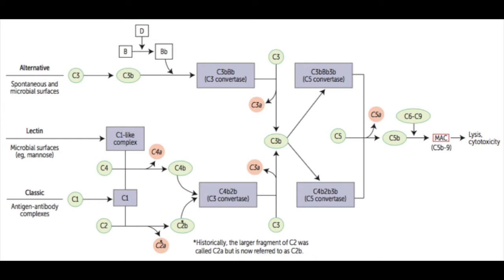This whole group, so 5b, 6, 7, 8 and then a ring of 9 is what we call the membrane attack complex. That results in lysis of the cell and cytotoxicity. This is the effect of complement being able to destroy a bacteria. So that whole pathway is called the classical pathway.